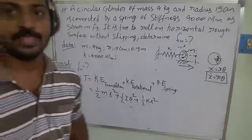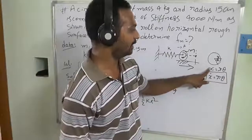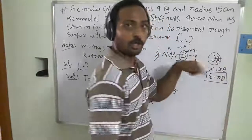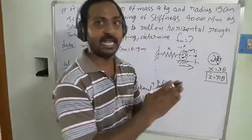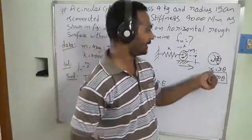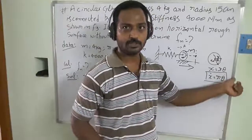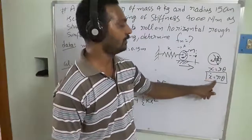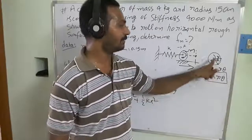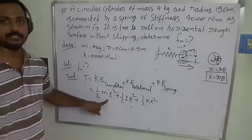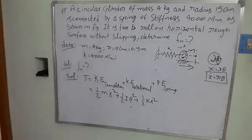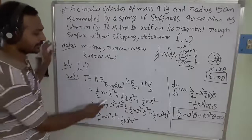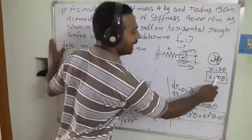Using the rolling motion constraint, the displacement is x equals r theta. Deriving with respect to time, the velocity equals radius into angular velocity (x-dot = r * theta-dot). Substituting these values into the energy equation, x-dot equals r times angular velocity is substituted throughout.